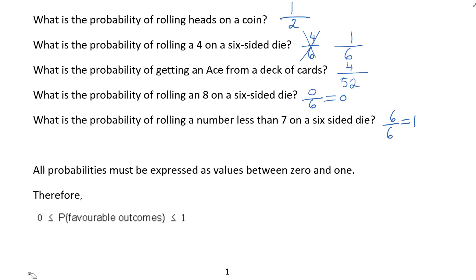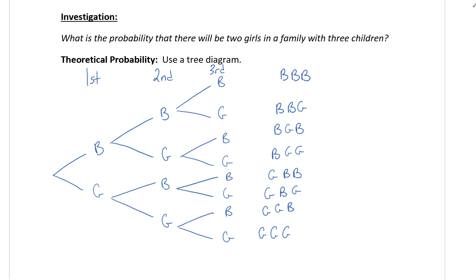Let's take a look at the next page here. Now this is the start of an investigation that we're going to look at. It says what is the probability that there will be two girls in a family with three children? Now we've seen this tree diagram before so I've just written it out. We've got our first child could be a boy or a girl, the second child if the first one's a boy the second child could be a boy or girl, if the first one's a girl could be a boy or girl and so on and I've listed out all eight outcomes.